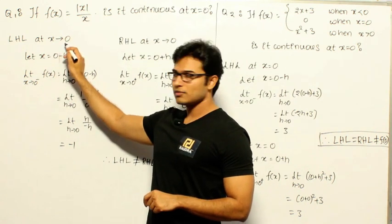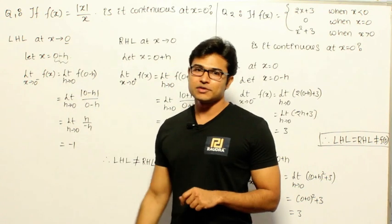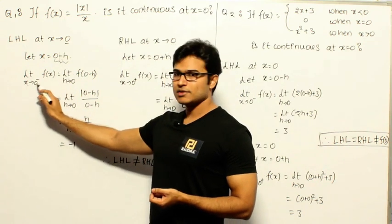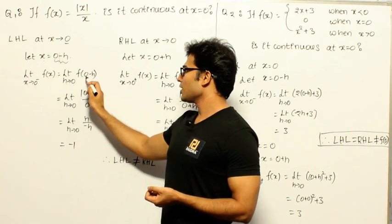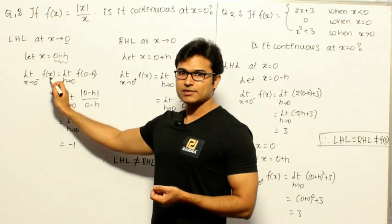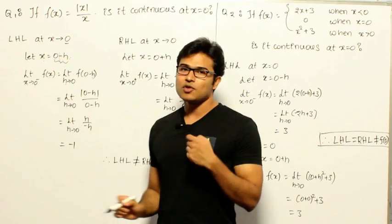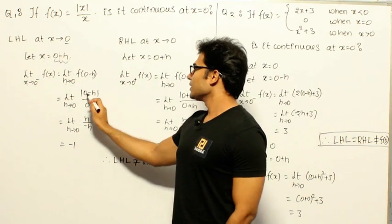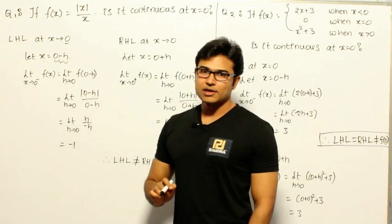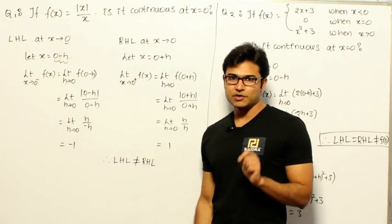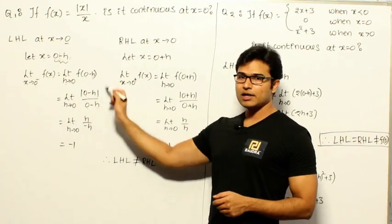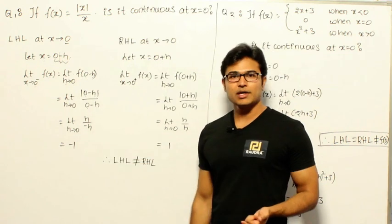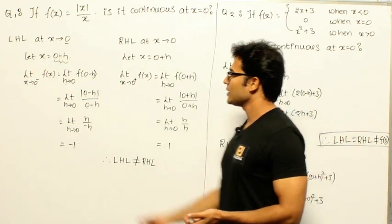So, limit as x → 0⁻ of f(x) equals limit as h → 0 of f(0 − h). Substituting 0 − h in place of x in |x|/x gives |0 − h| / (0 − h). Now h is a small positive value, so −h is negative. Applying the modulus converts −h to positive h. Therefore we get h / (−h) = −1. So the left-hand limit is −1.